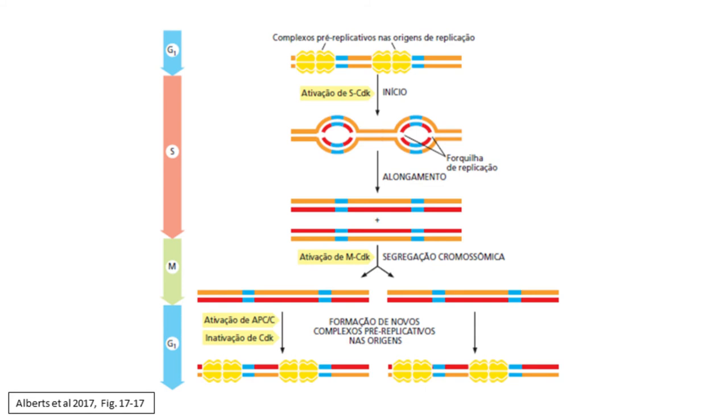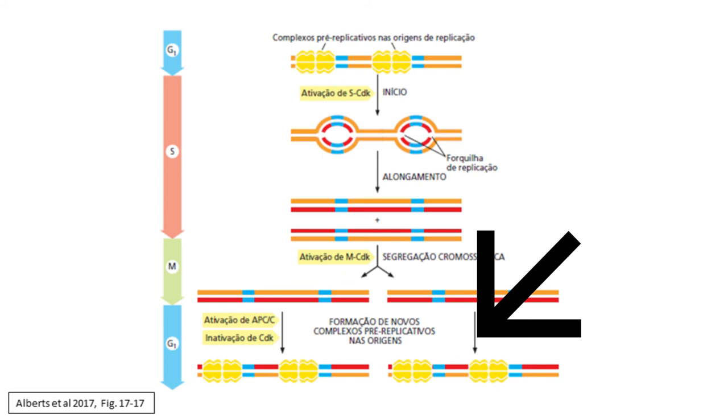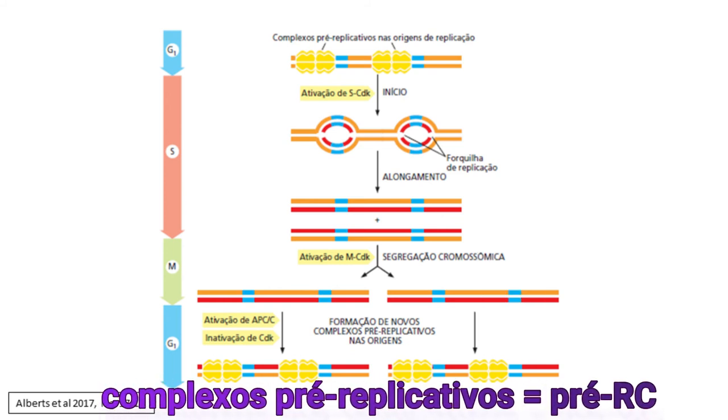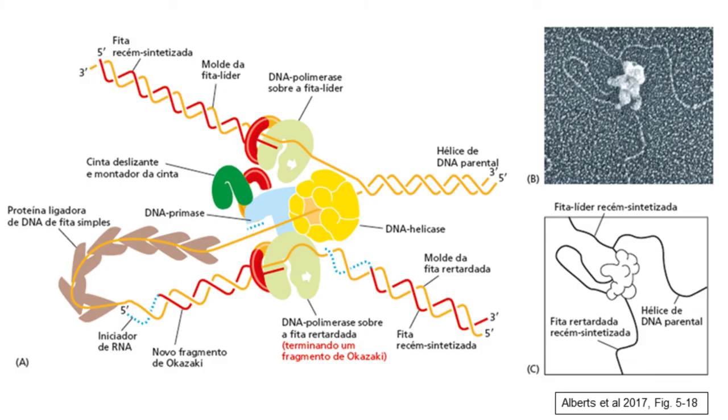Para a célula não correr o risco de que a replicação do DNA não aconteça durante o ciclo celular, ou ao contrário que ela aconteça duas vezes no mesmo ciclo, essa ação das helicases é controlada e ocorre em duas etapas distintas. A primeira é no fim da mitose e começo da fase G1, quando as helicases ainda inativas se ligam nos pontos de origem de replicação e formam os chamados complexos pré-replicativos, ou pré-RC. A segunda etapa ocorre na fase S propriamente dita, quando as helicases que já estavam ligadas nesses complexos são ativadas e dão início ao processo de replicação.